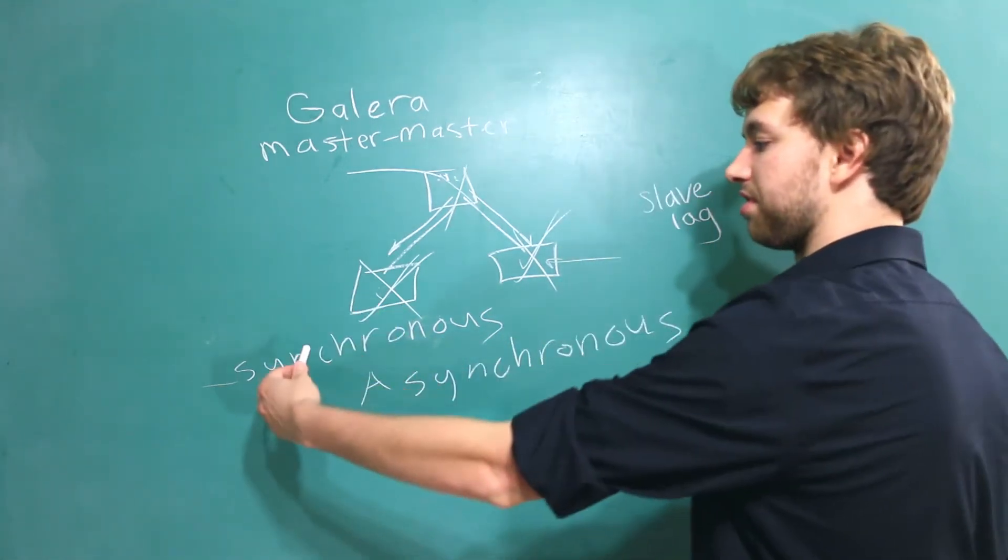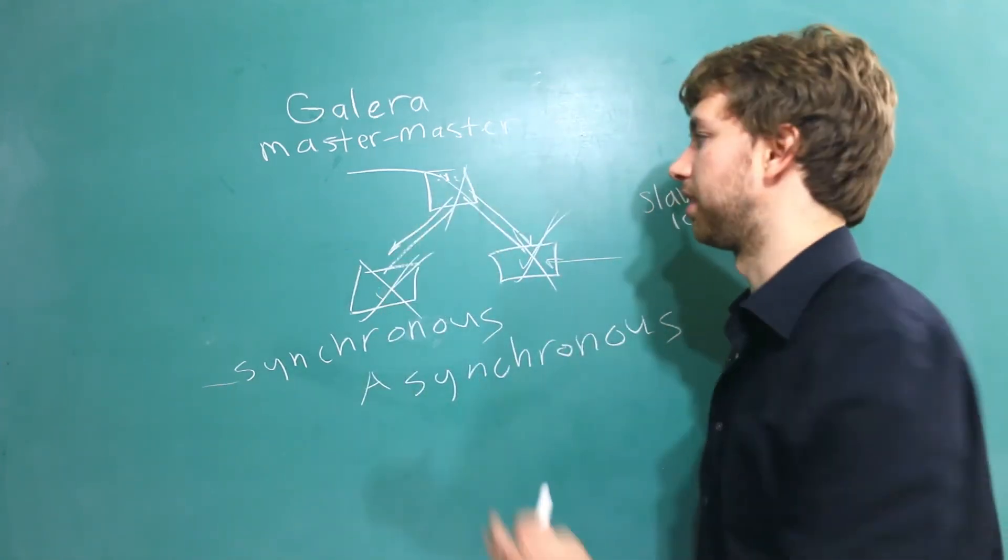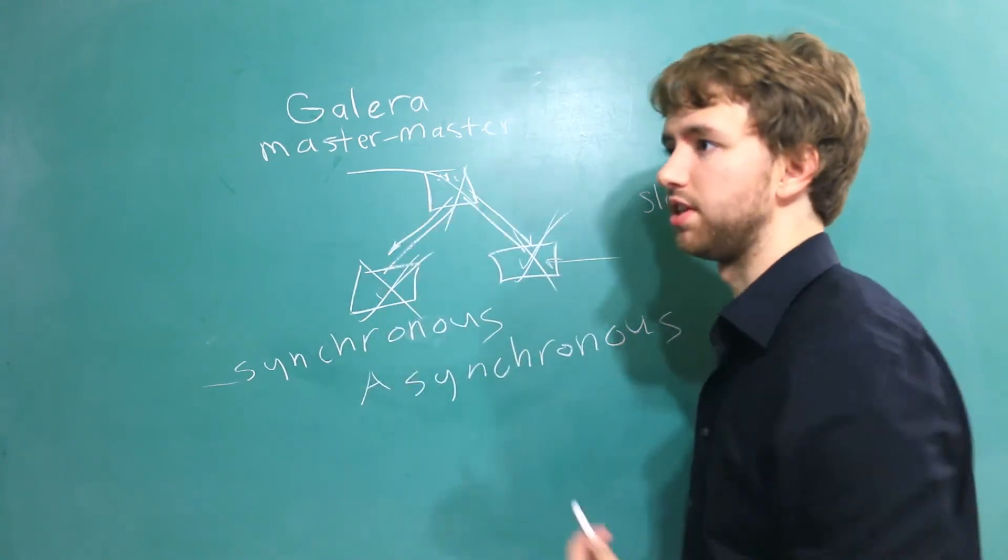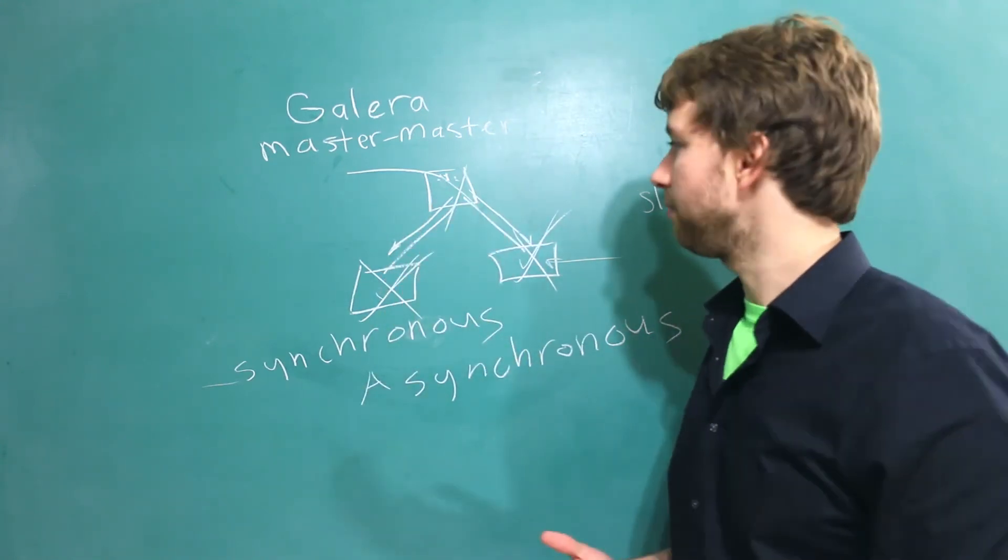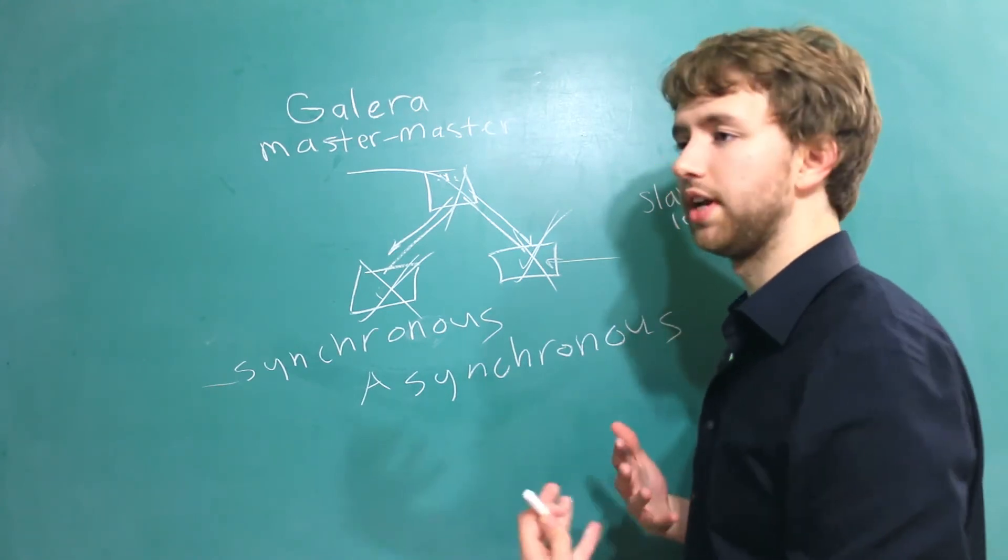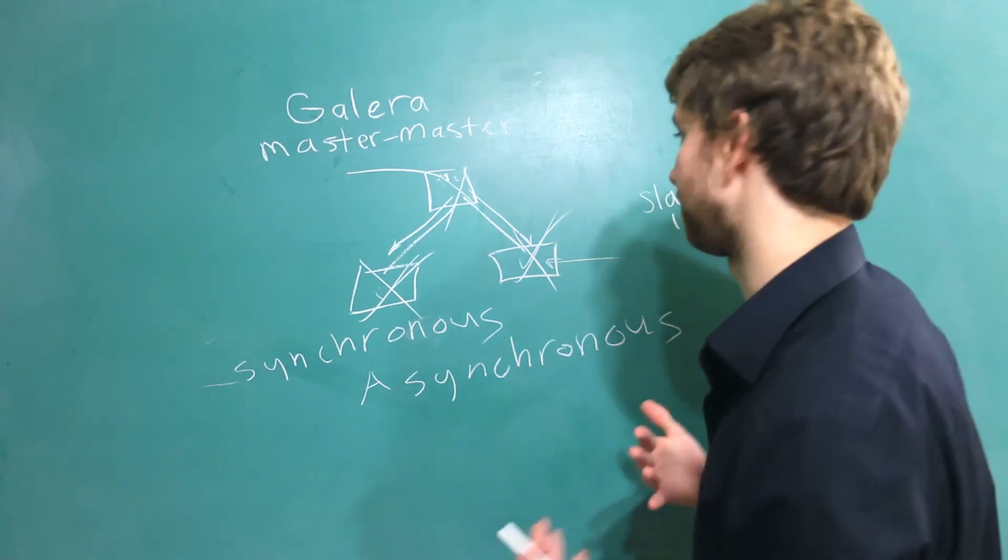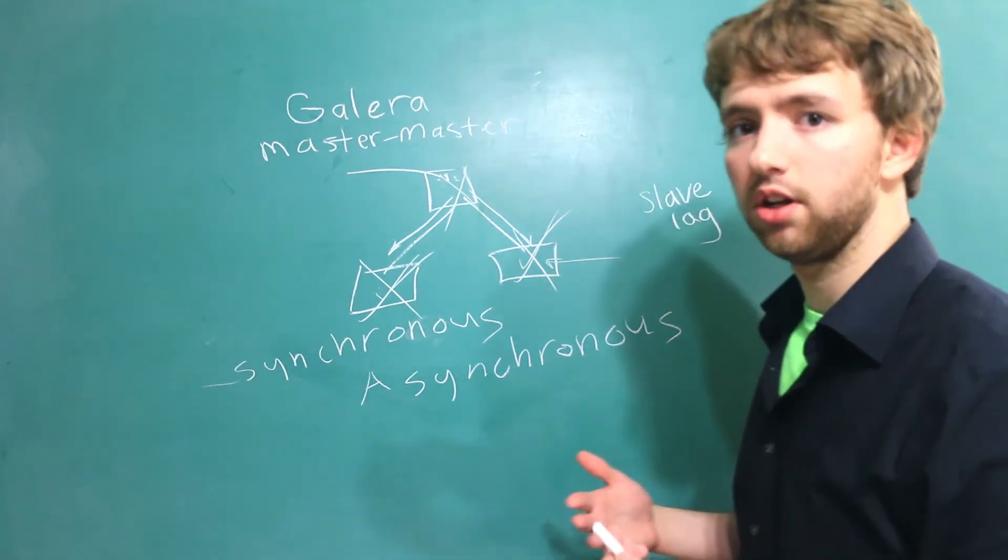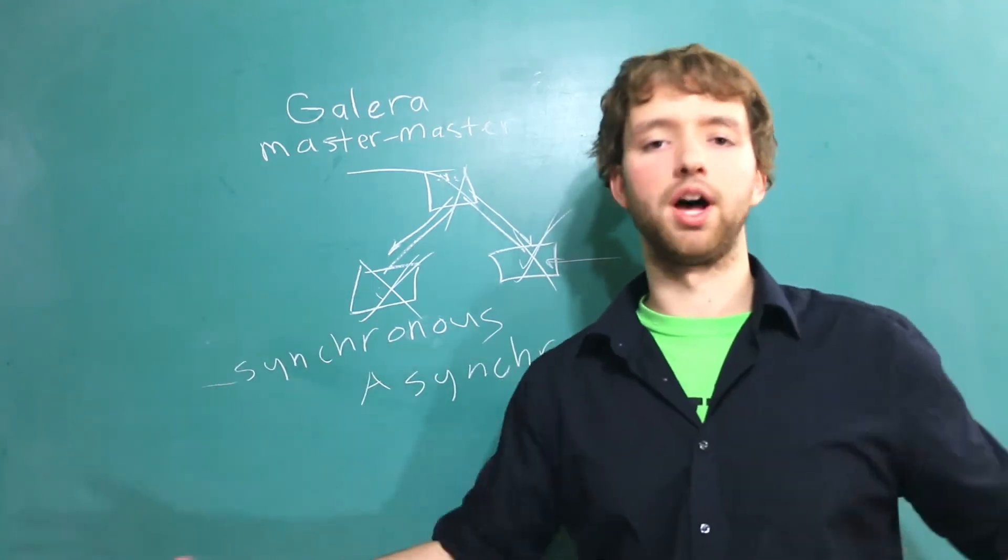The downside with synchronous though is that the writing process altogether kind of takes longer because we have to get agreement amongst all these things before the official change is applied. That means when we're writing to our database that transaction is going to take longer. Whereas with a master-slave topology you can just write to the master boom it's done and then that data change gets applied everywhere.